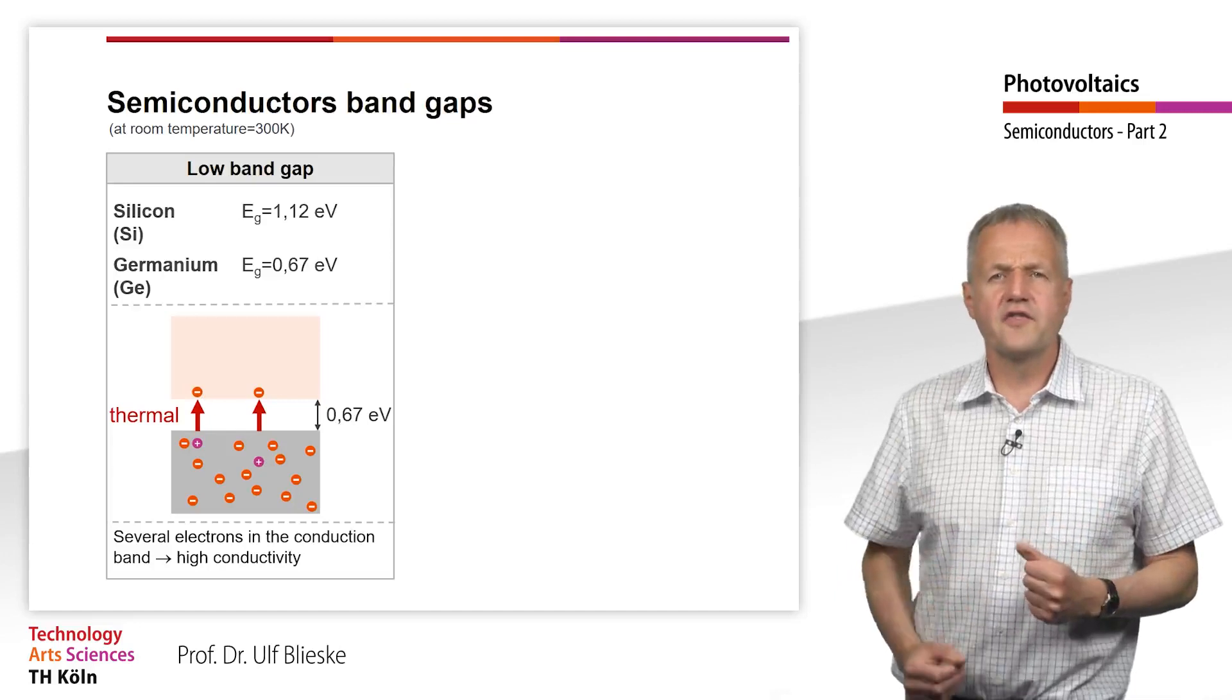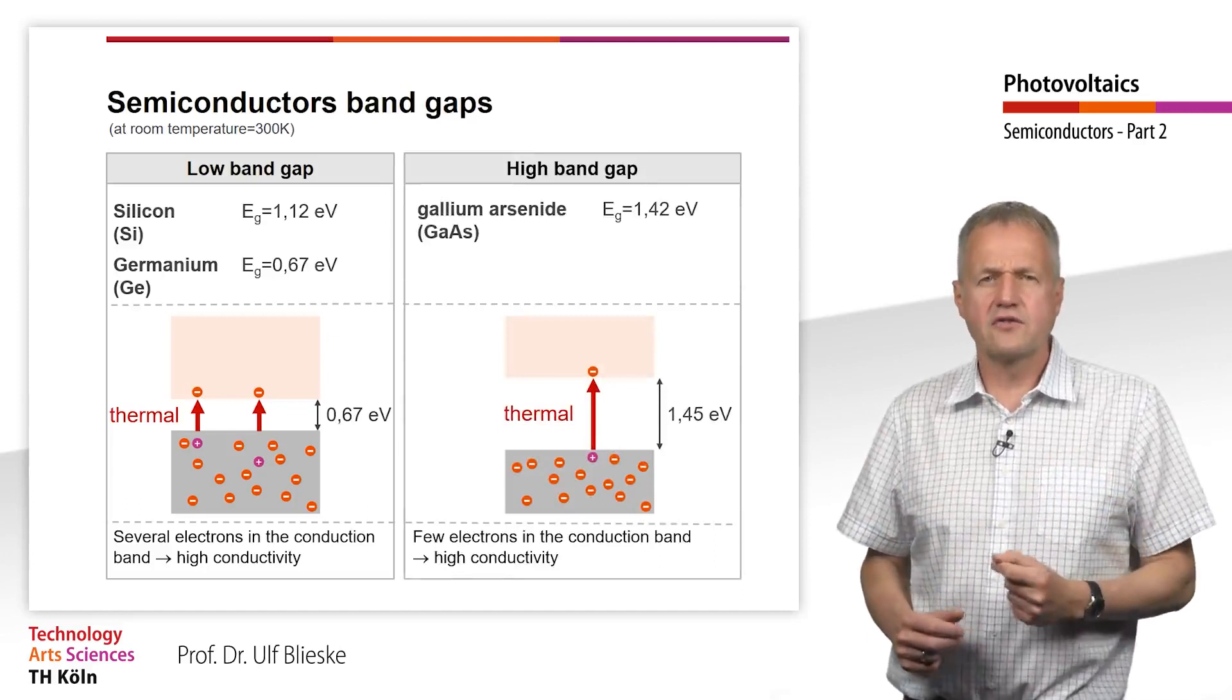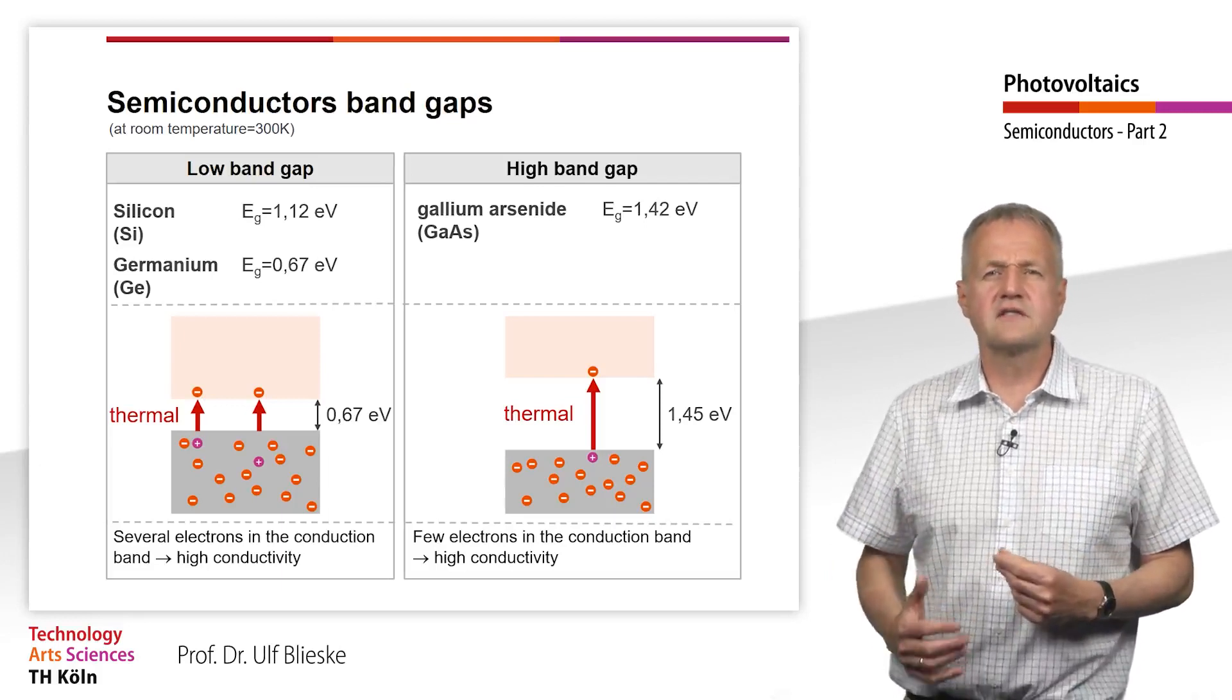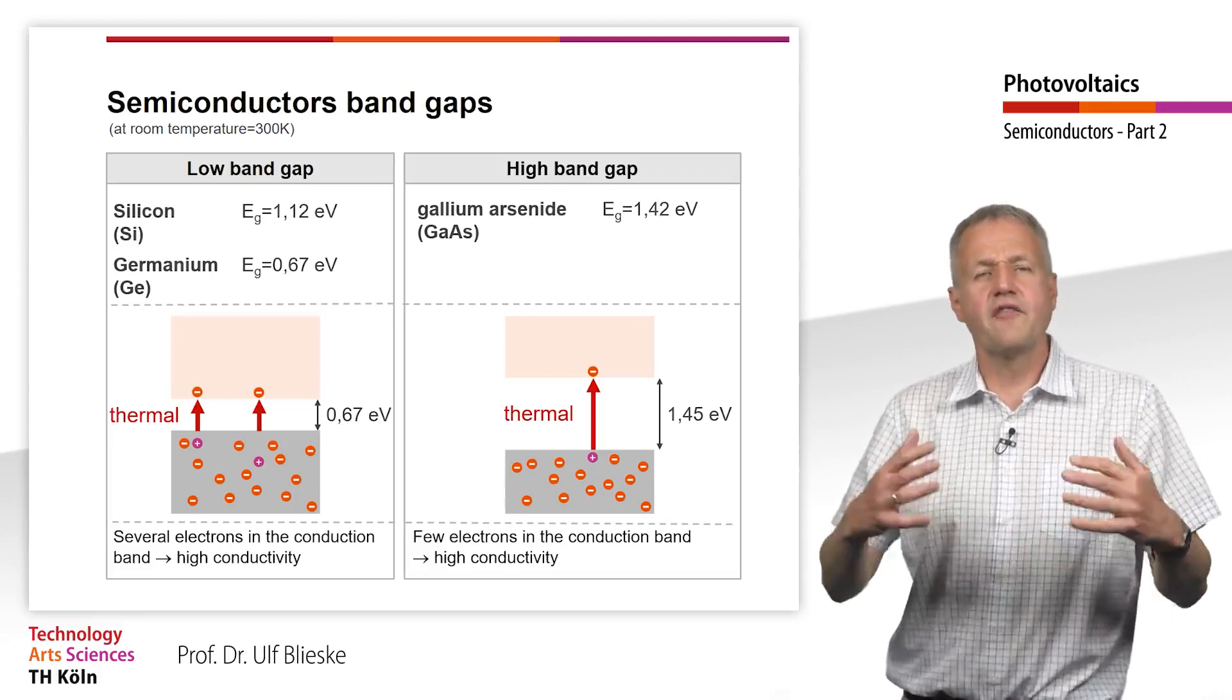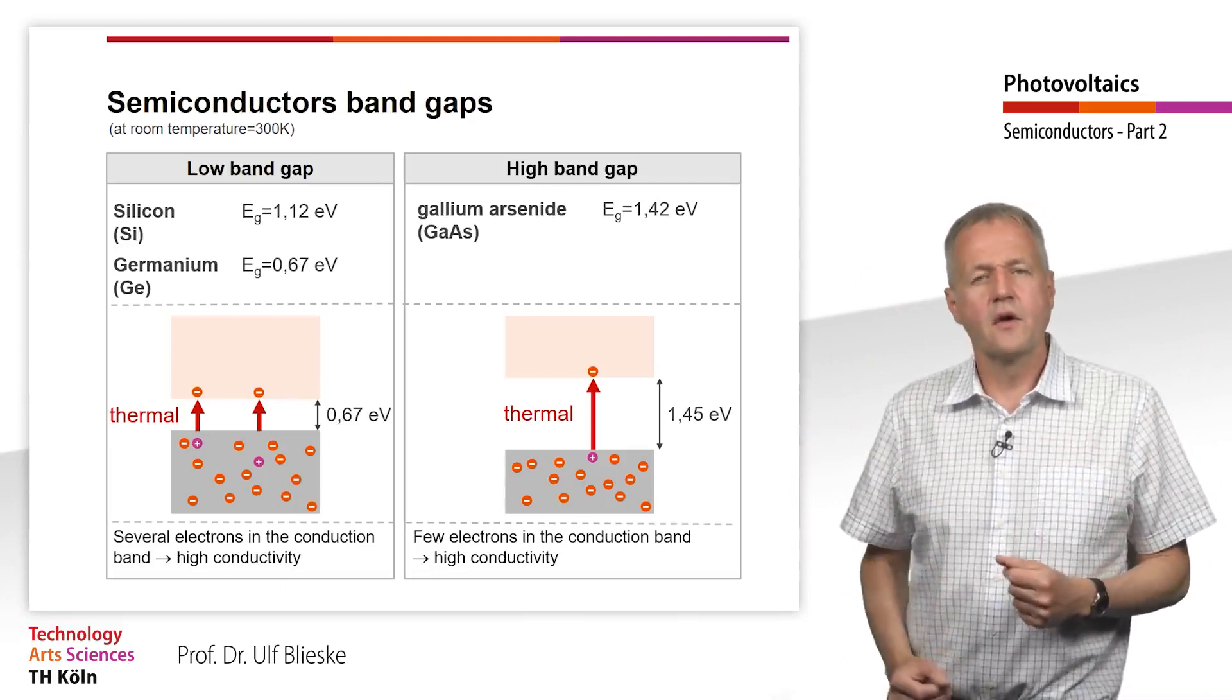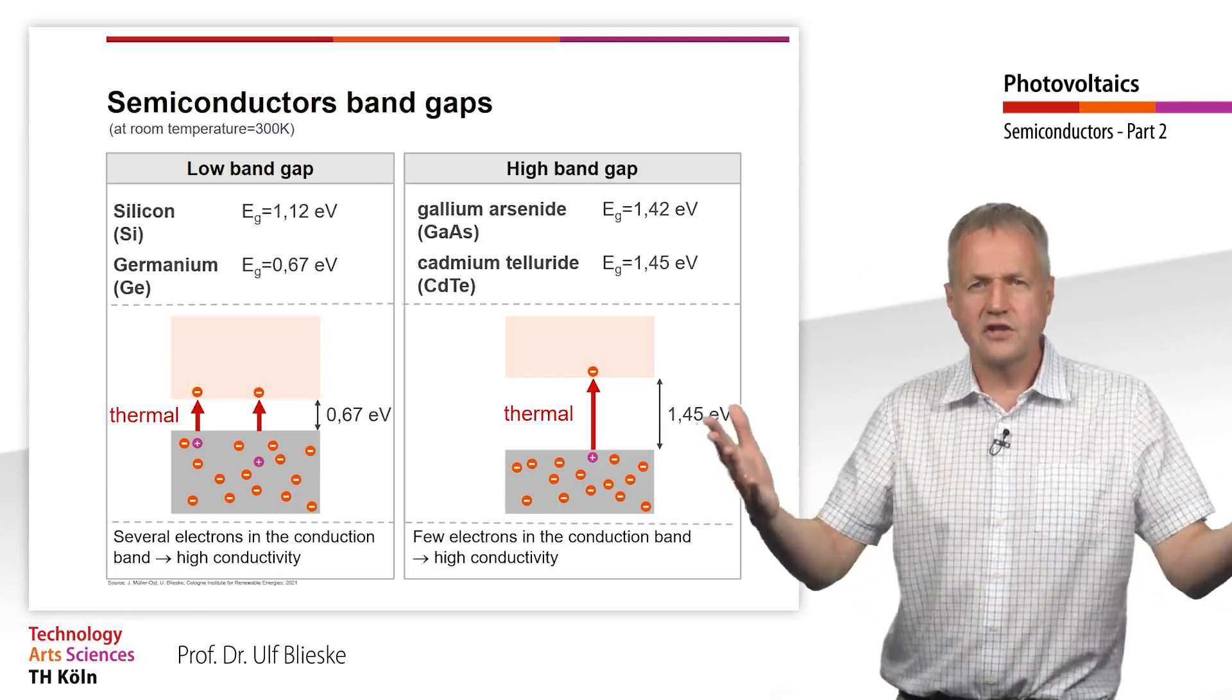This is different for semiconductors with comparatively large band gap. Here only a few electrons are in the conduction band at room temperature. Typical semiconductors, which are also used in photovoltaics and have a higher band gap, are for example gallium arsenide, which is used for space solar cells, or cadmium telluride, which is used for low-cost solar modules in very large solar parks.